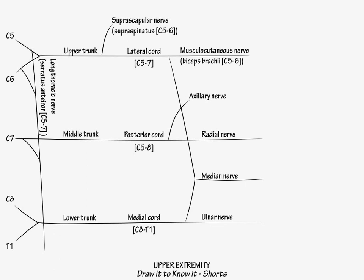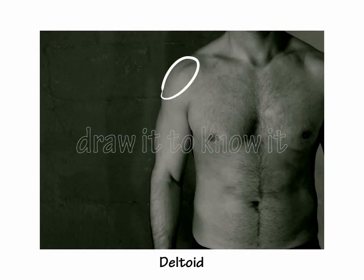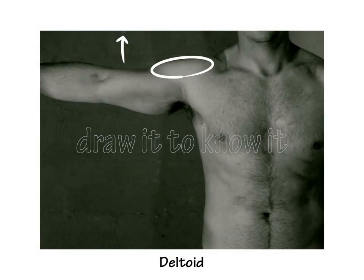Then draw the axillary nerve off the posterior cord, and show that it most notably innervates the deltoid muscle, C5-C6, which is responsible for the latter 70 to 80 degrees of arm abduction.